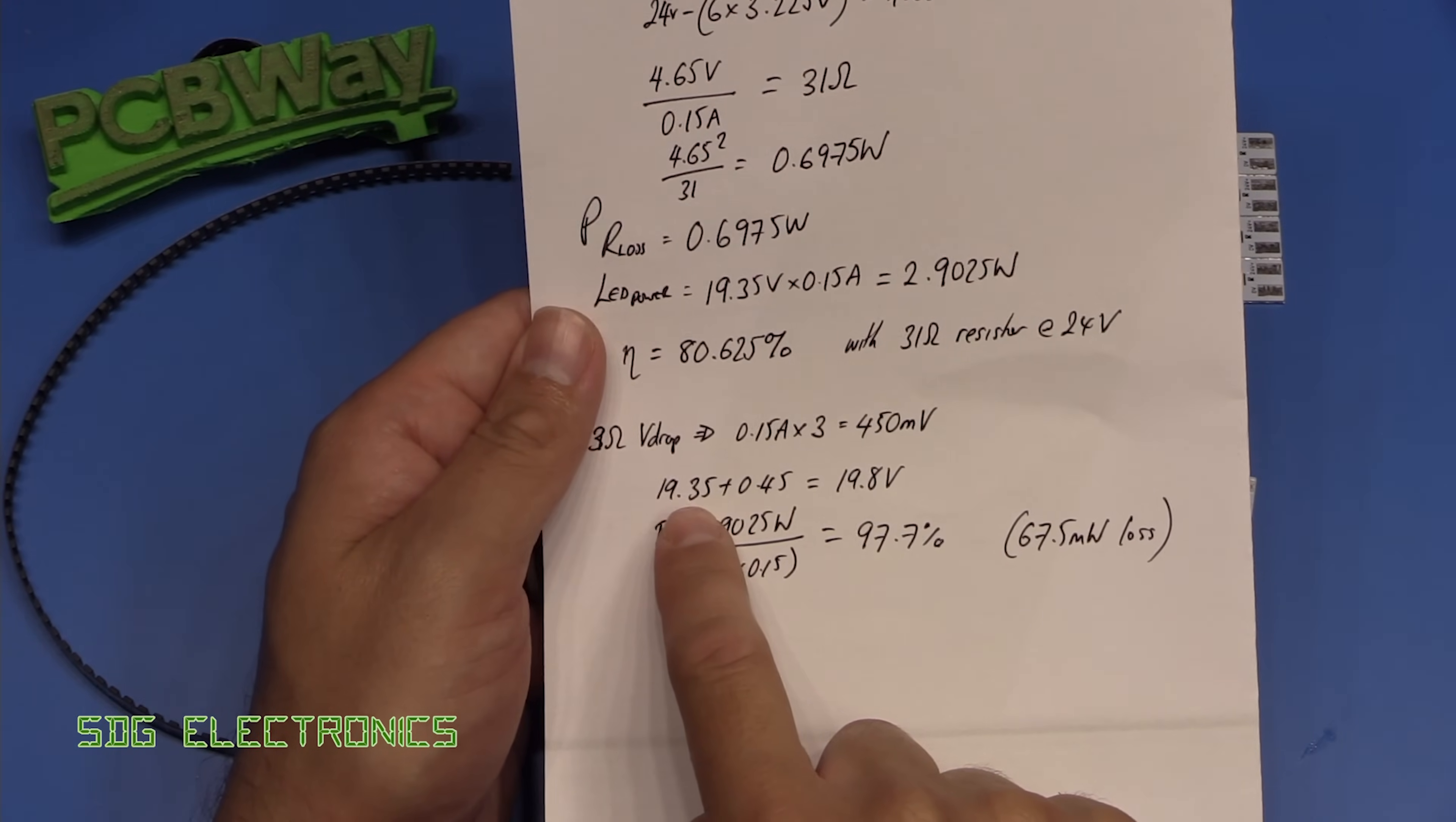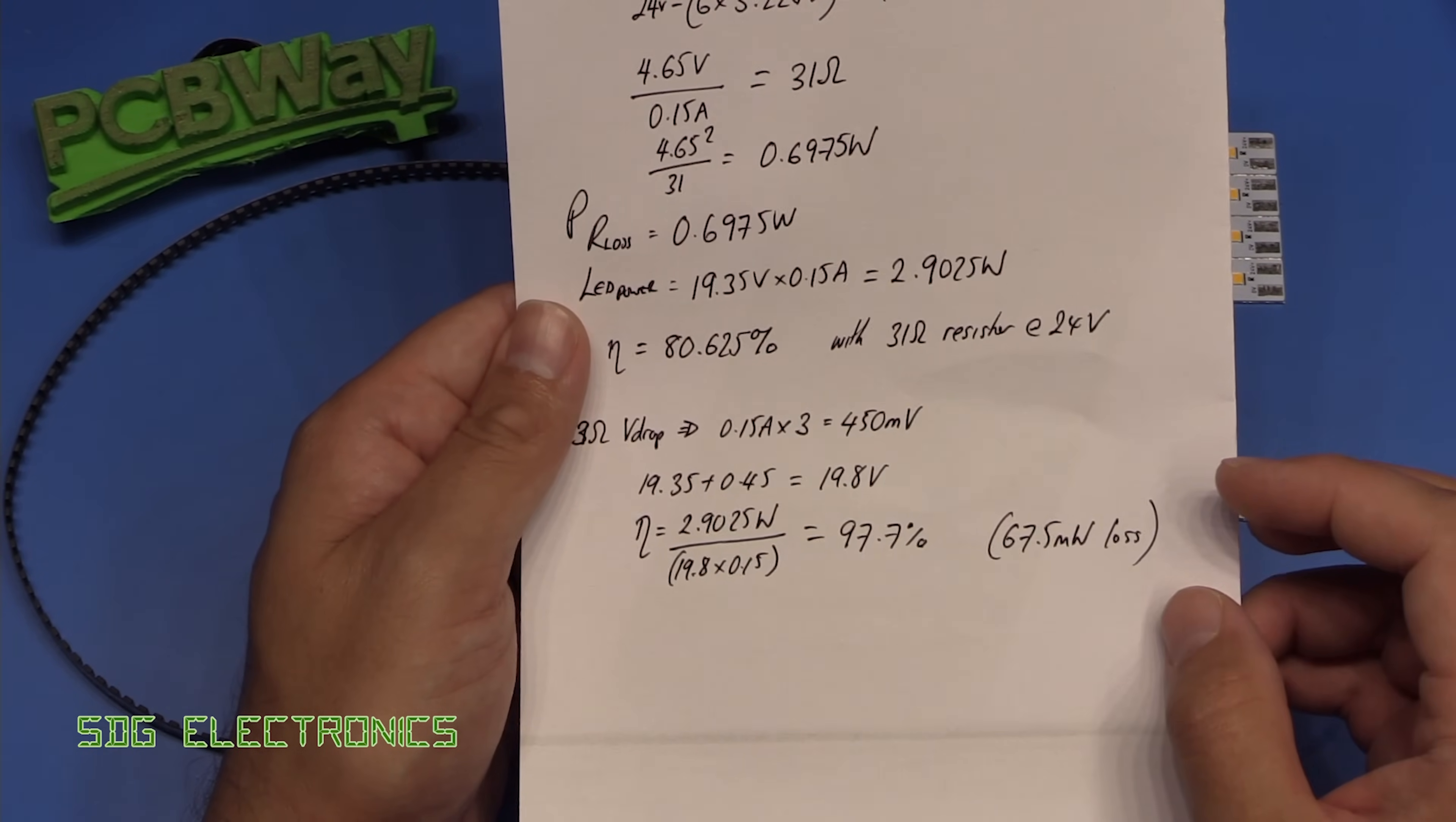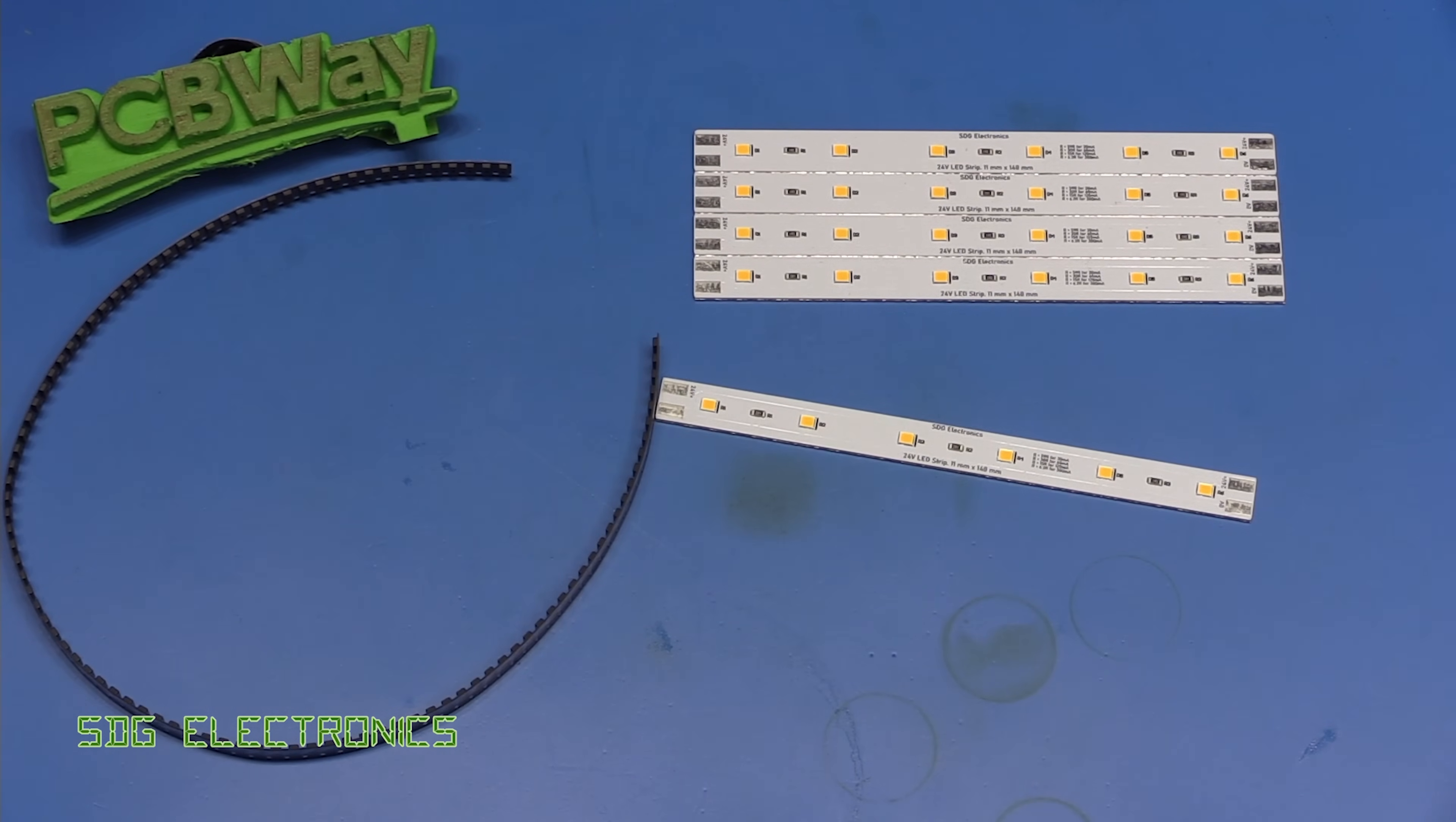we need to add about 2.5 volts onto the forward voltage of those LEDs. So we probably want to raise this voltage up to around 22 volts or so and we can do that with our modified power supply no problem. So that should work quite nicely on these PCBs.